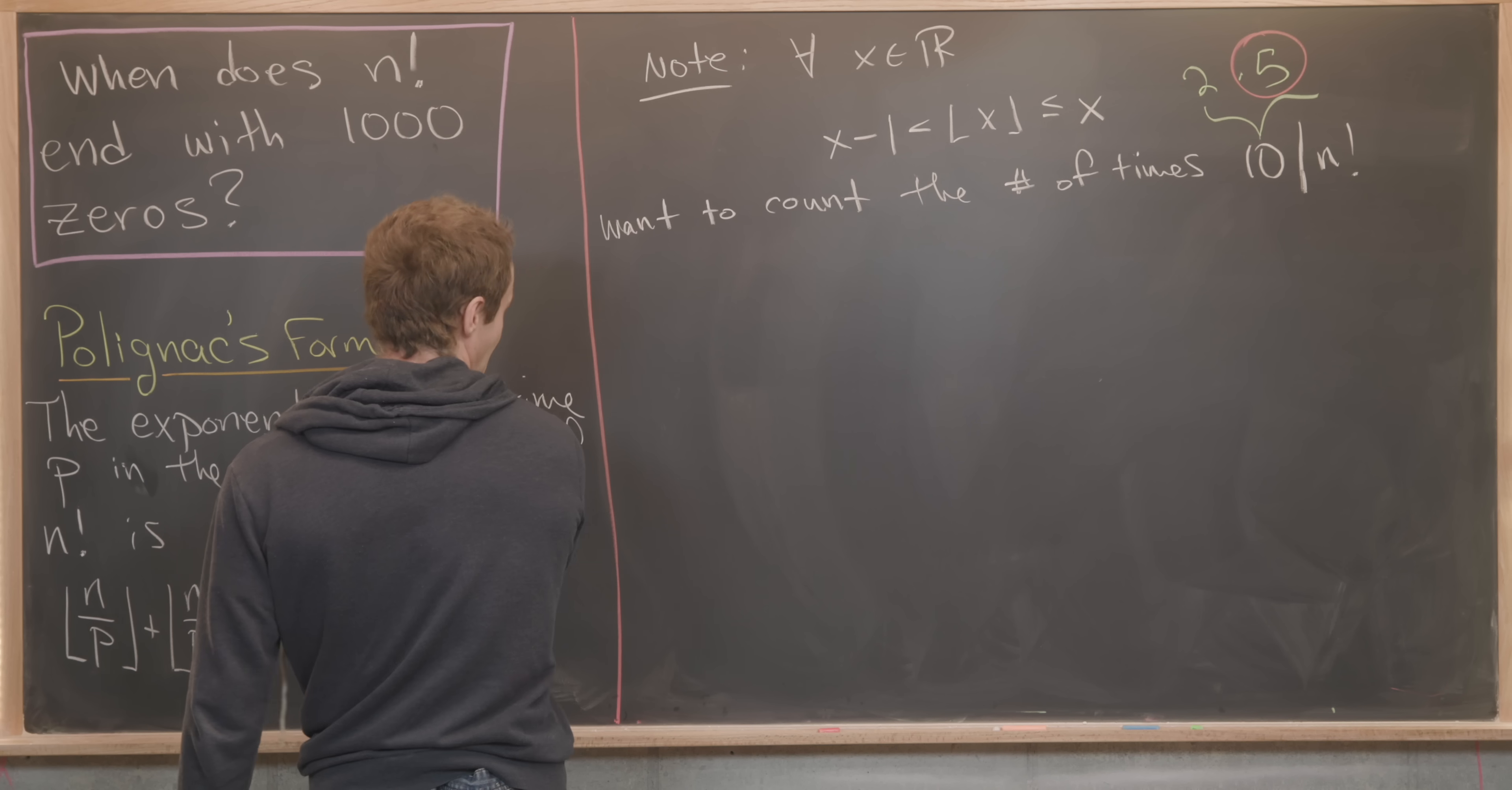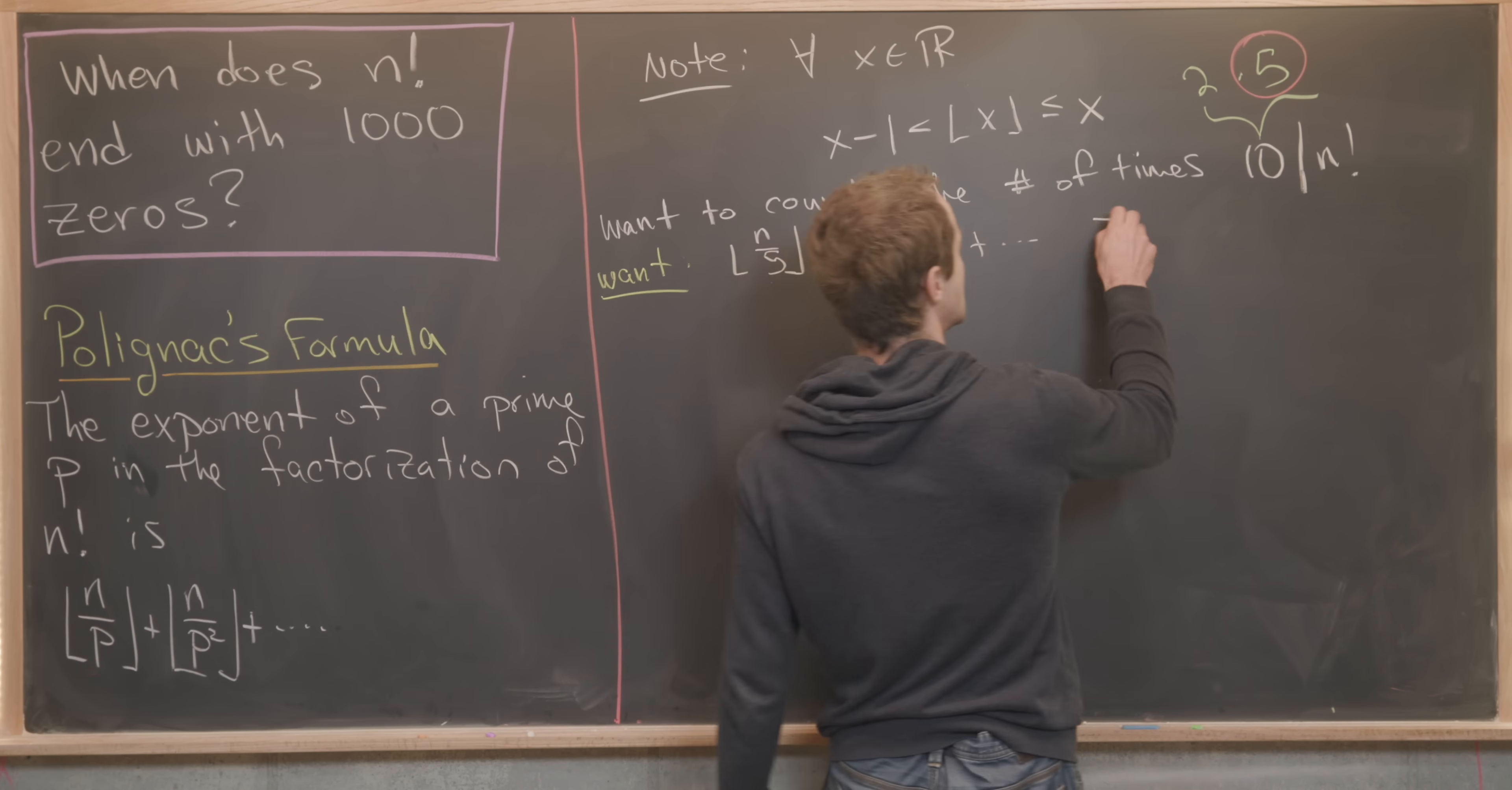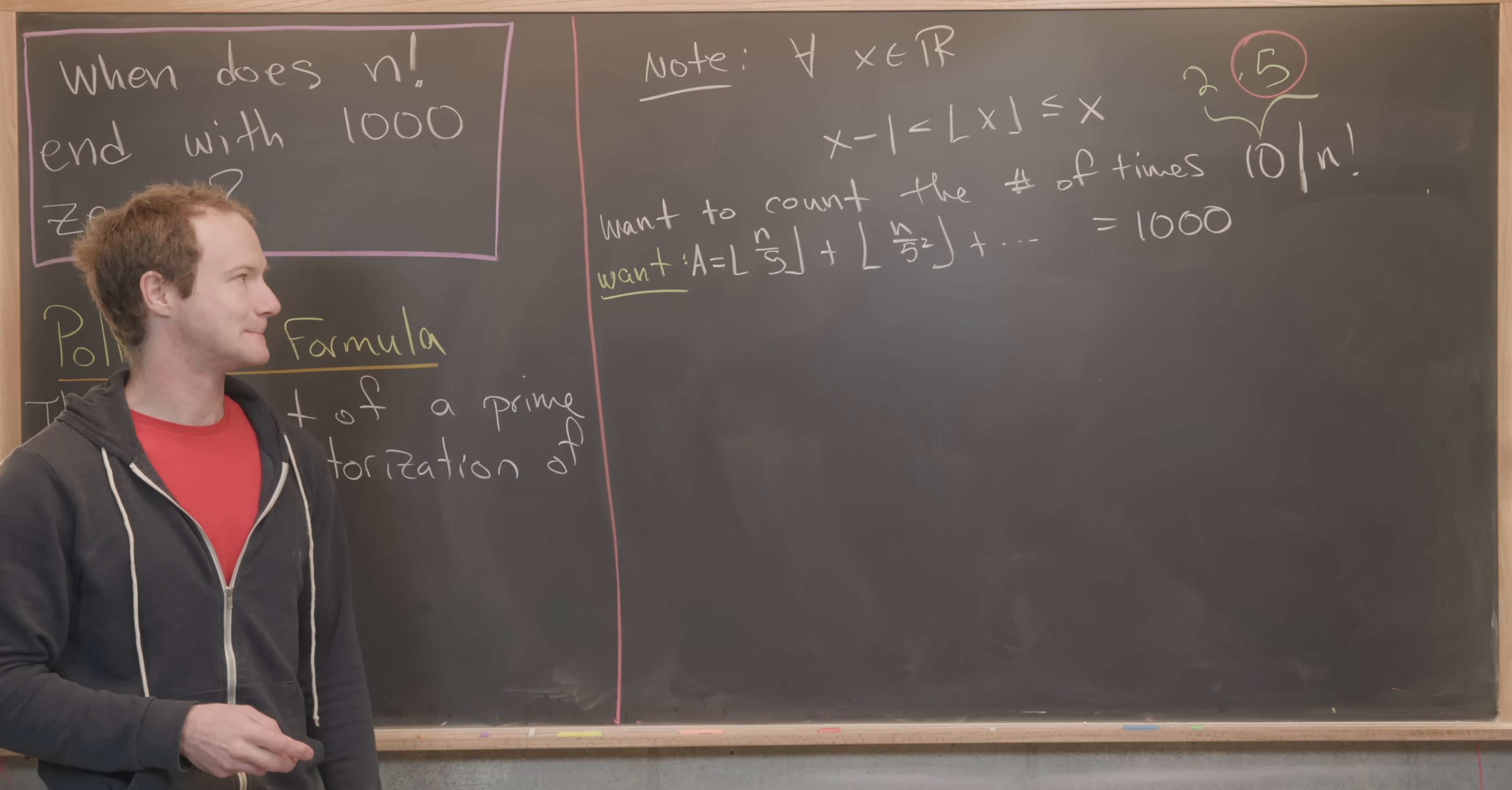In other words, we want to solve setting this expression equal to 1000 for p equal five. So we want the floor of n over five, plus the floor of n over five squared, all the way up—that's going to be an infinite looking sum that eventually truncates—equal to 1000. Now let's set this equal to capital A, just so that we have some easy notation.